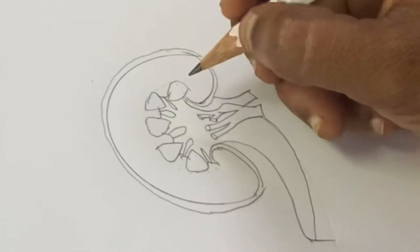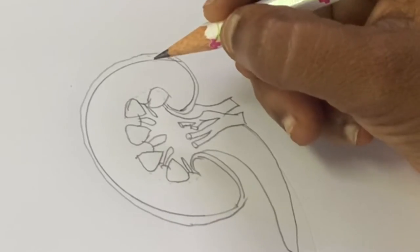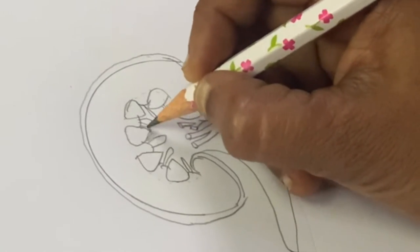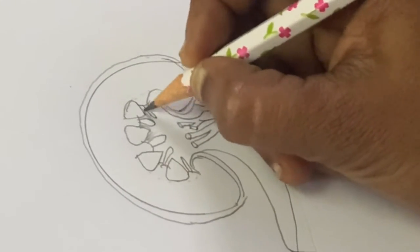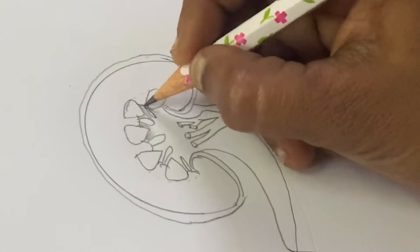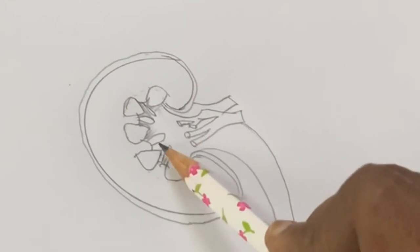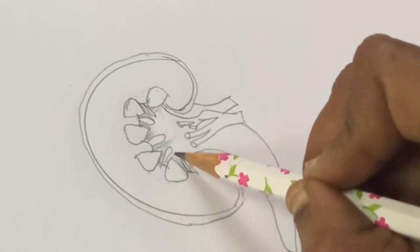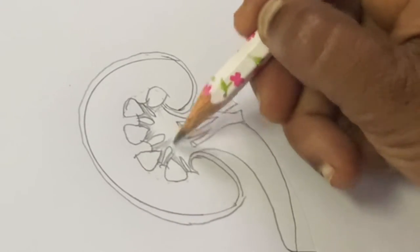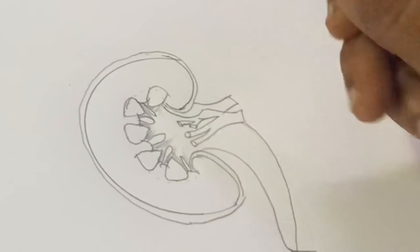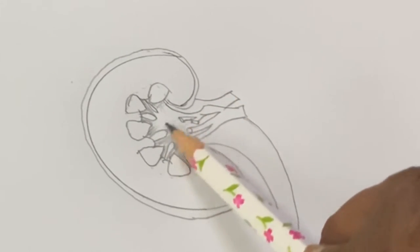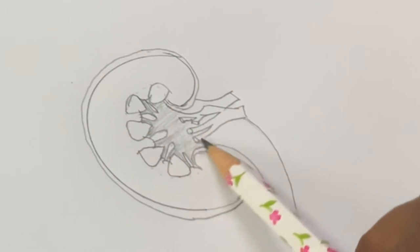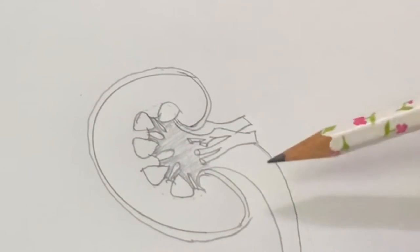These are the renal columns, and these are the calices, cup-like calices. You have to darken these areas. This is the pelvis region, the renal pelvis. This enters into the ureter.